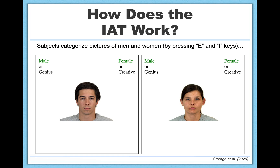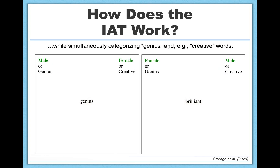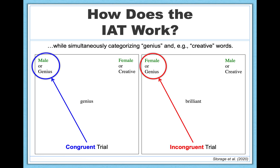Here you can see two sample trials from my IAT. Subjects on these trials would sort the man into his appropriate category on the left by pressing E on the keyboard, and they would sort the woman to the right by pressing I on the keyboard. At the same time, words from a genius category and words from a control category — in this case, creative — can also pop up. Participants are required to sort the items from all four categories simultaneously. It's important to distinguish between congruent trials, in which the categories paired together are congruent with the association we predict people have — so here, male plus genius — and incongruent trials, in which the categories paired together are incongruent with that association, so female plus genius. A switch happens halfway through the test, so participants see both types of trials in the same session.